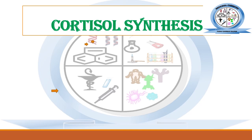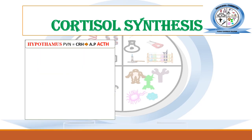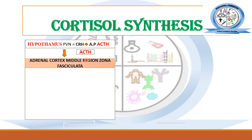Let's start with the biosynthesis of cortisol. First, we will look at the basic stimuli for its synthesis. The synthesis of cortisol is initiated by certain stimuli in the hypothalamus region of the brain. The paraventricular nuclei releases corticotropin-releasing hormone (CRH), which travels towards the anterior region of the pituitary, where the anterior pituitary then releases adrenocorticotropic hormone (ACTH).